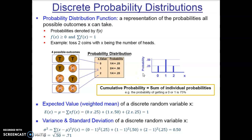Sometimes we may want to calculate a cumulative probability — the sum of the individual probabilities up to a particular value. If I want the cumulative probability of one head, I'm asking what is the probability of getting any x value up to that point, so zero or one. We sum the probabilities: 0.25 plus 0.5, which is 75%. The cumulative probability of two heads would sum all three probabilities — zero, one, and two — equaling 100%. This confirms that all probabilities are greater than or equal to zero and sum to one.